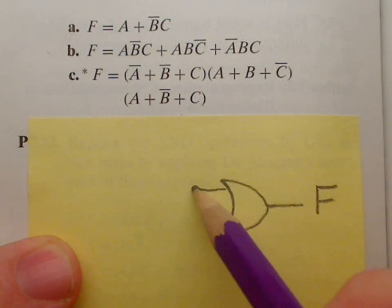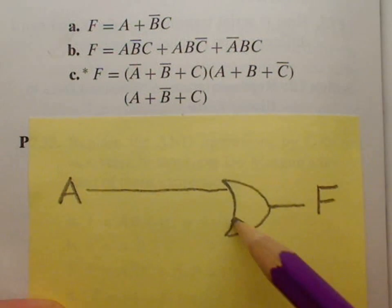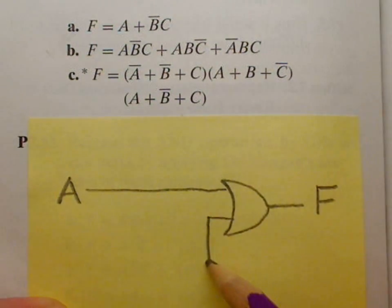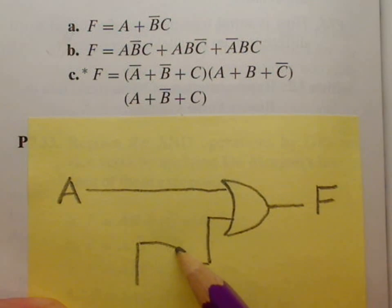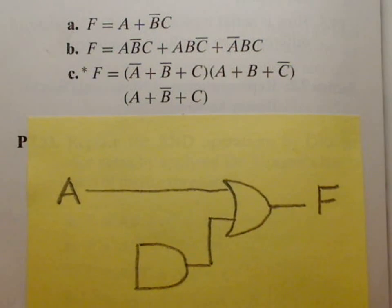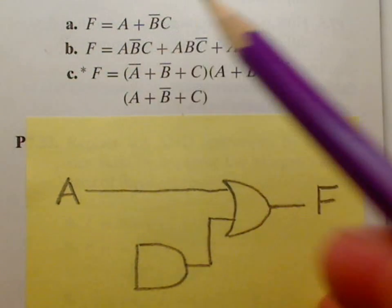And one of those inputs is going to be the input A, and the other input is going to be an AND gate. That's a flat back and a curved front like that, so that's the AND in between.